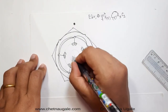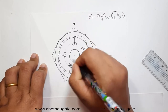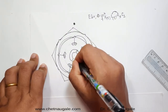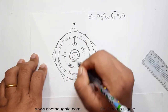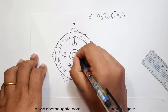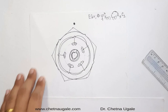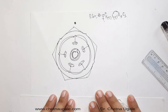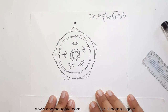This epipetalous condition is a characteristic feature of the Solanaceae family. The next whorl is the gynoecium, which is bicarpellary. In this case the carpel shows a swollen placenta, and on this swollen placenta the number of ovules are arranged in each locule. The ovary is bilocular and the ovules are arranged on the swollen placenta. This completes the floral diagram of the Solanaceae family.